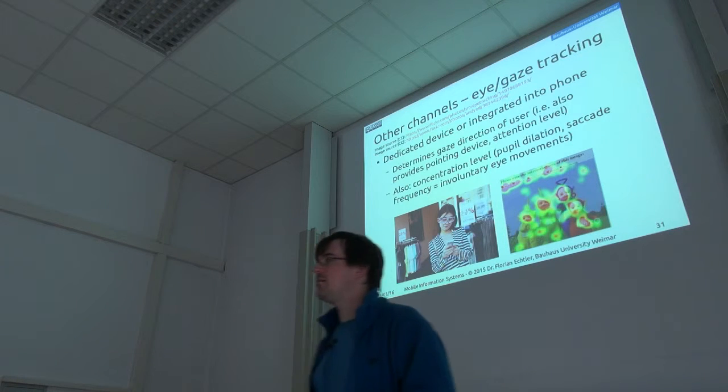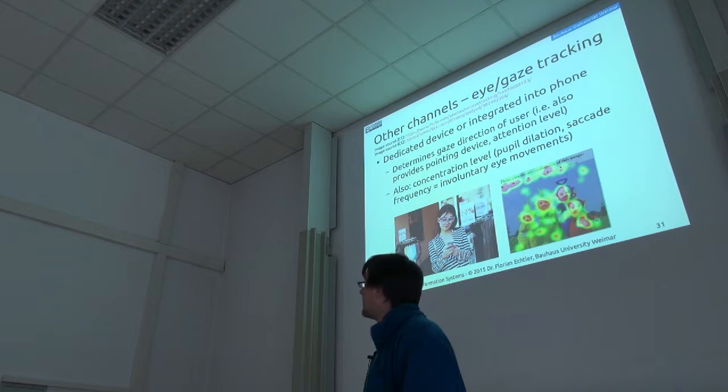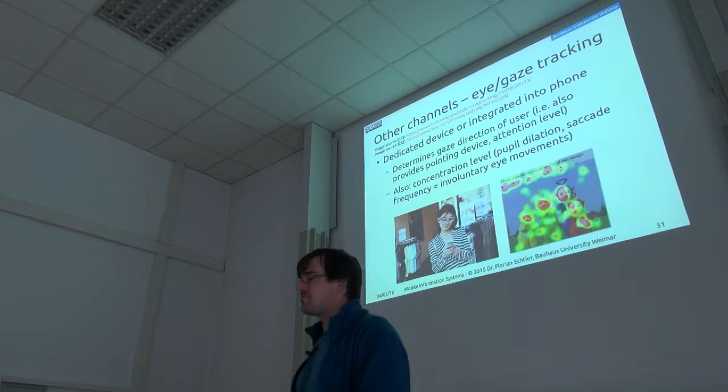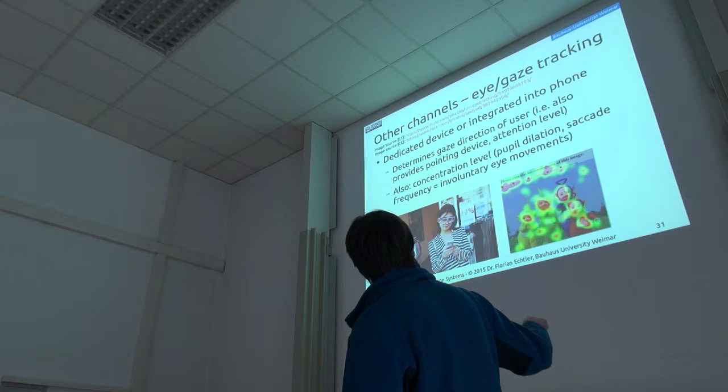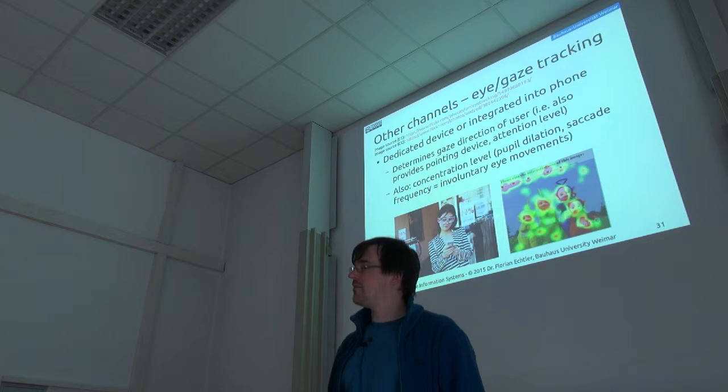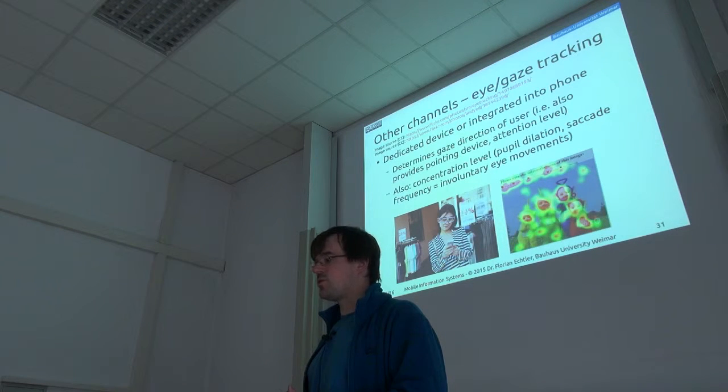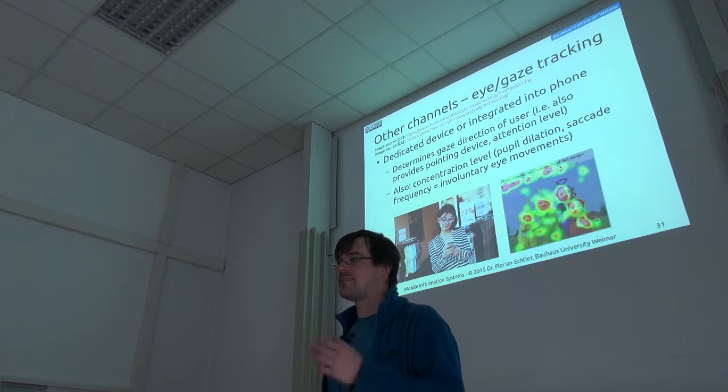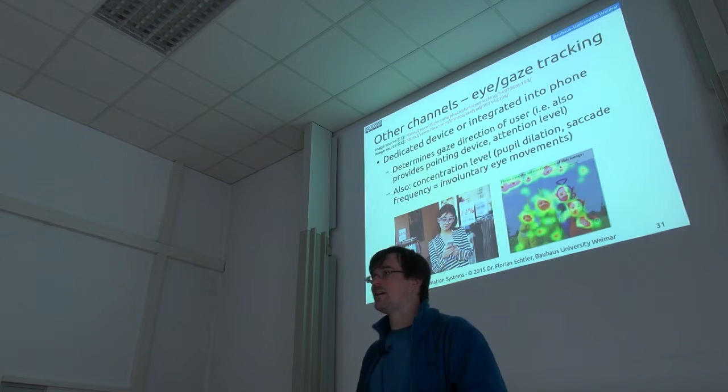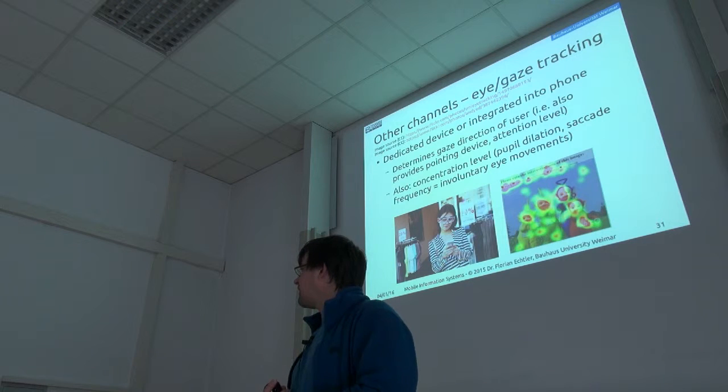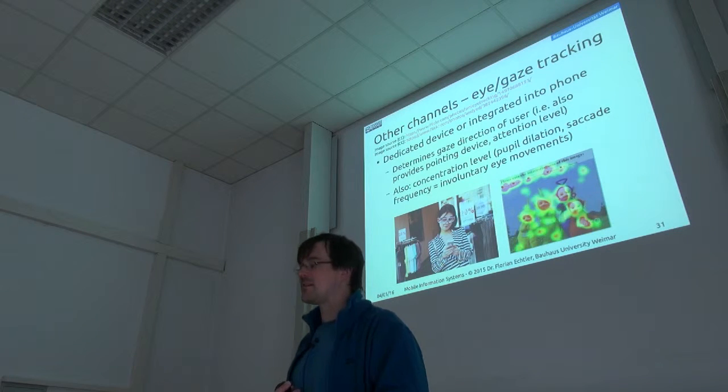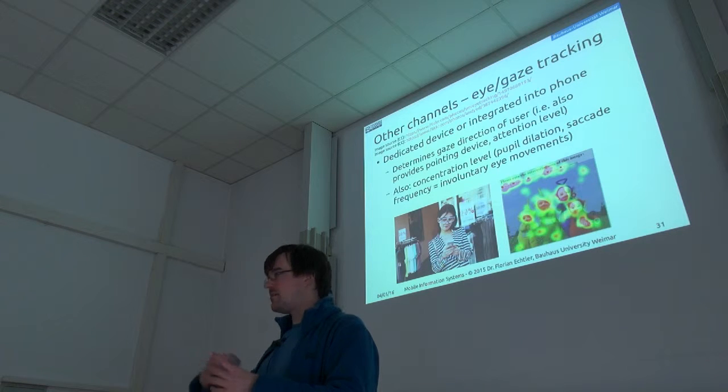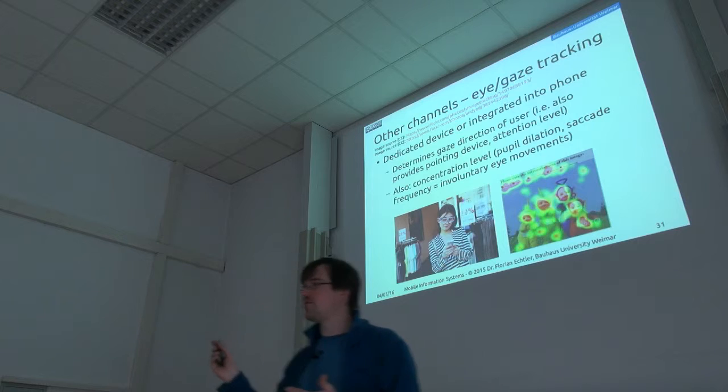Then we have eye tracking, gaze tracking. You've maybe also come in contact with that in other lectures. So in this example, that woman is wearing dedicated gaze tracking glasses, which are then used for kind of user research, usually, to determine where on a picture people are actually looking. There are also some phones which do have an integrated gaze tracker. That's usually a second infrared camera and an infrared light source, which tries to detect the reflection in the pupils. And there has been some, actually, I think some commercial devices, some Samsung phones again, which, for example, if you're watching a video and you look somewhere else, then it will detect that your gaze has gone off the screen and it will pause the video.